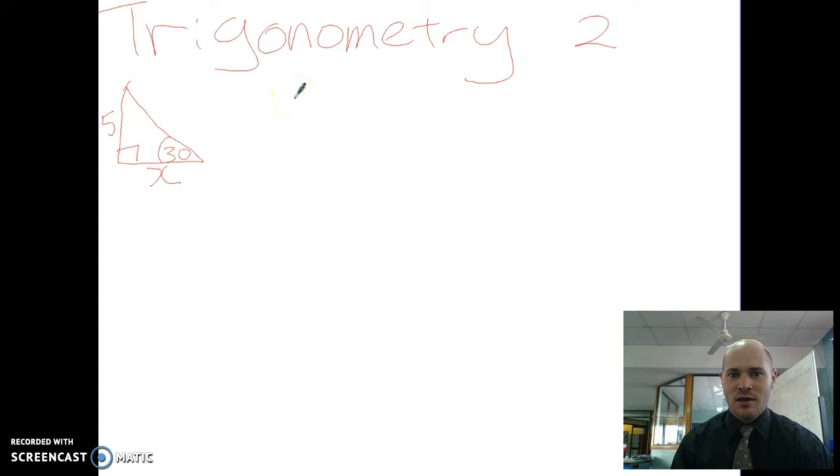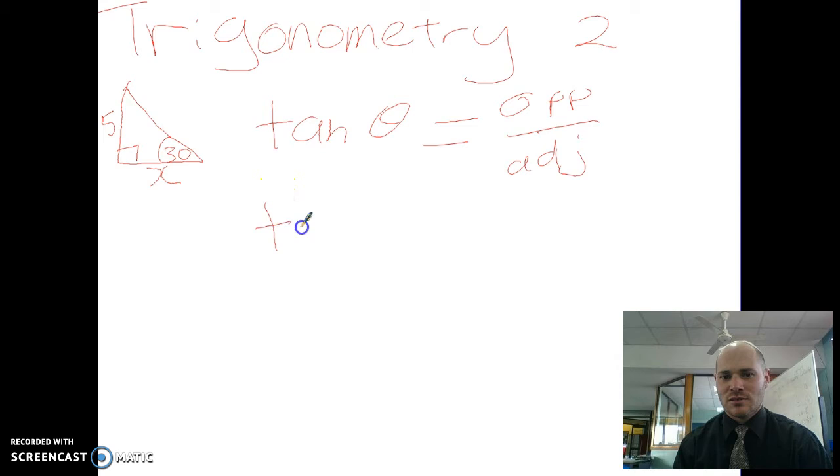So I follow my same process and the first thing I ask is am I using my hypotenuse? The answer is no. So automatically I know I'm going to use my tan ratio. So my tan ratio is opposite over adjacent. Step two I'm going to put in my known values. So the first one, tan of 30 degrees, my opposite is 5 and my adjacent is x.